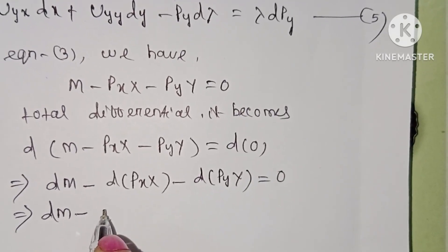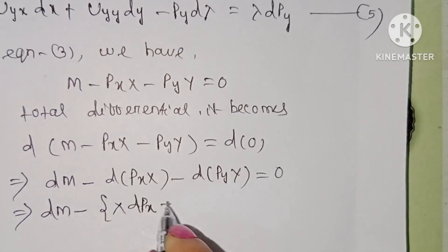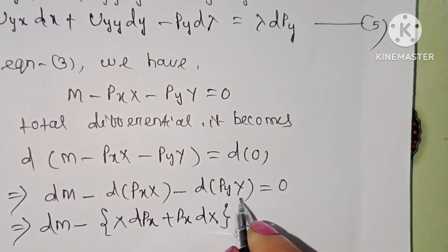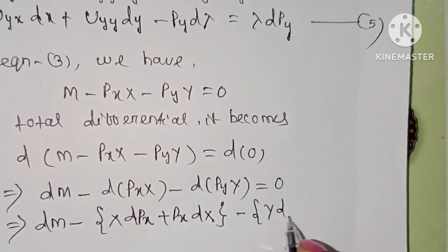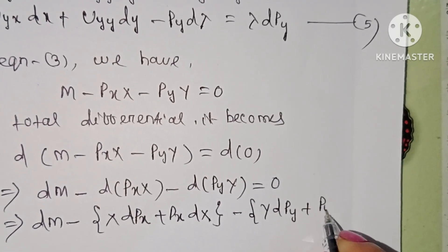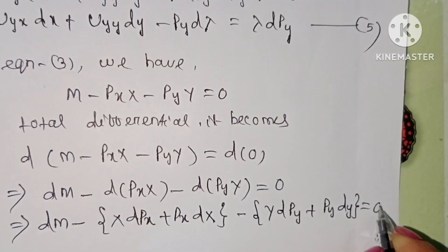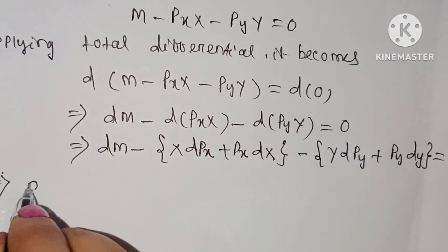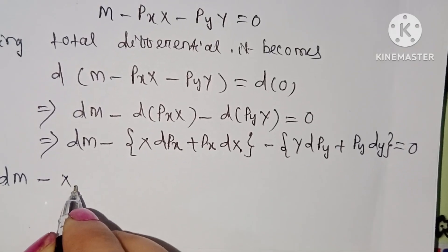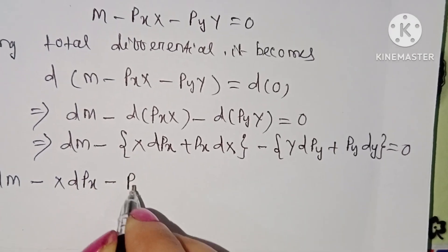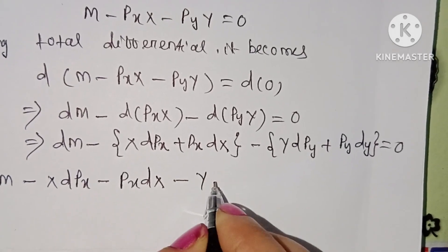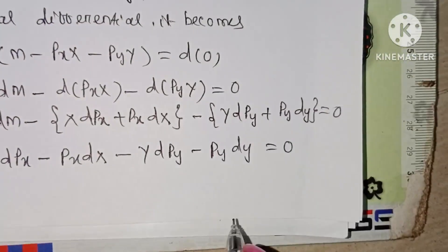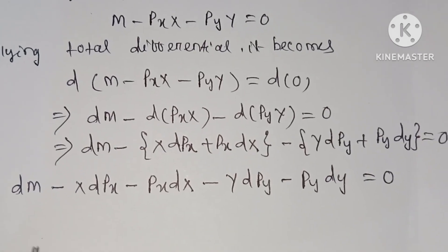Applying the product rule, d(px·x) becomes x·dpx plus px·dx, and d(py·y) becomes y·dpy plus py·dy. Removing the brackets, this becomes dm minus x·dpx minus px·dx minus y·dpy minus py·dy equal to zero.